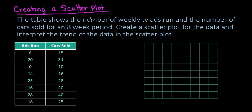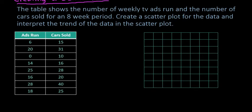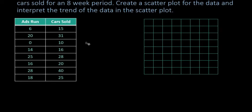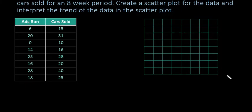The first thing you want to do when creating a scatterplot is to create a scale that fits your data set. Our data set is all positive values, so I only have quadrant one drawn out here — that's all you're going to need. What we want to do is look at each of our variables and decide which one should be our X variable.